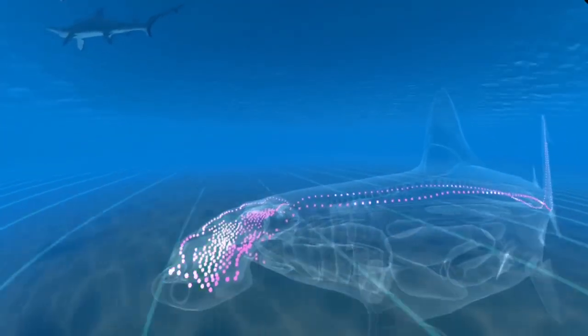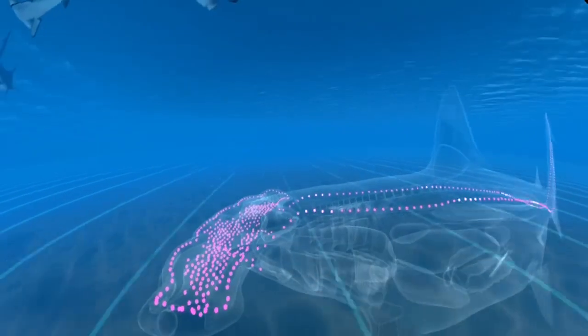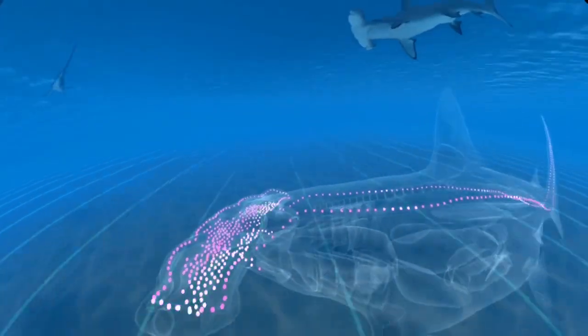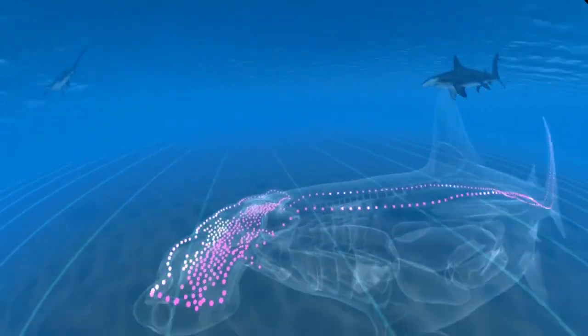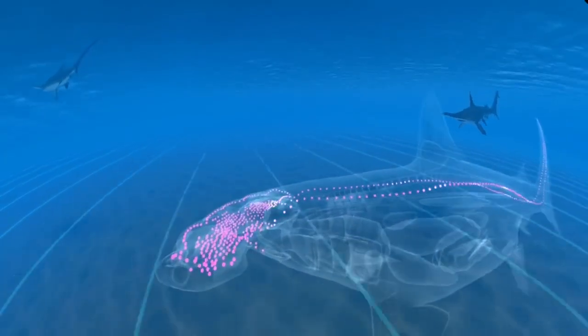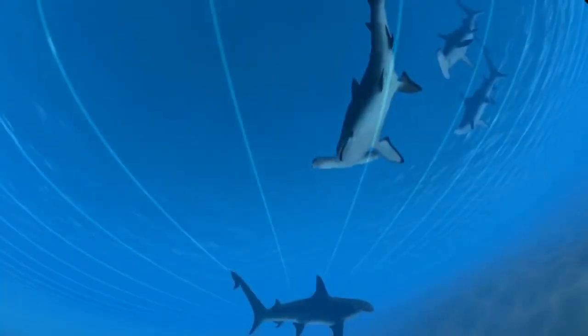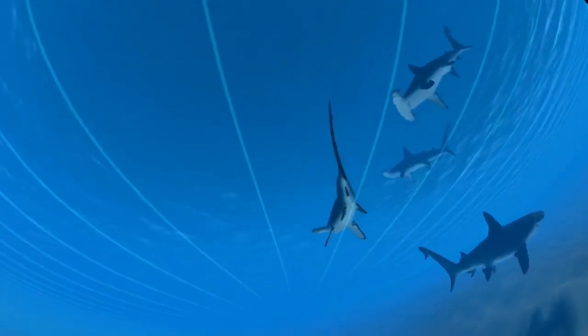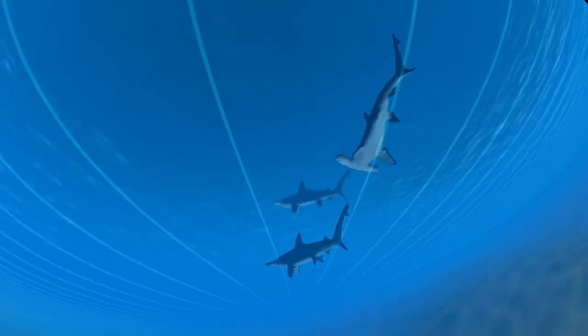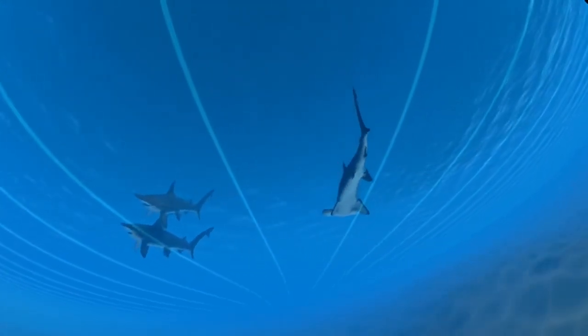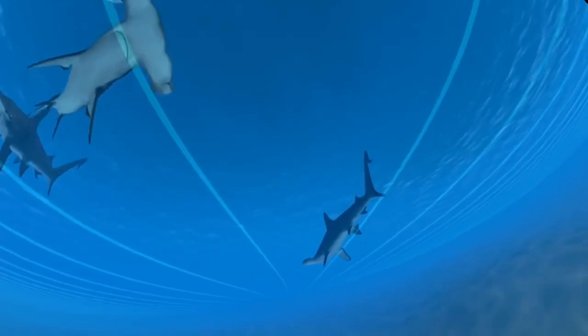Hammerhead sharks have special gel-filled organs called the ampullae of Lorenzini, which detect electric fields, both natural fields and those created from swimming across magnetic fields. Sensitivity to magnetic fields helps sharks and other fish swim in straight lines across the open ocean.